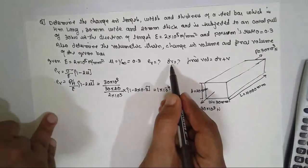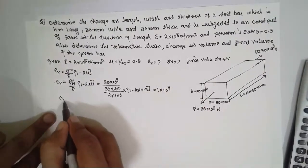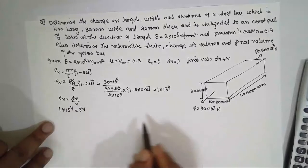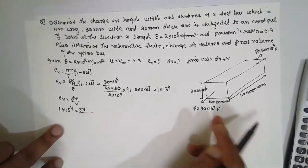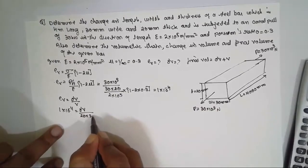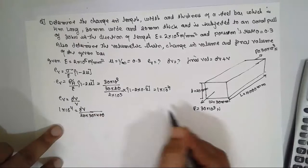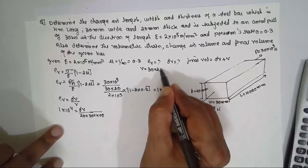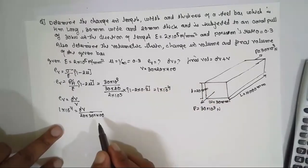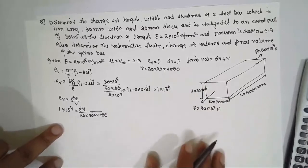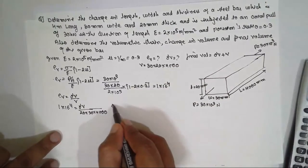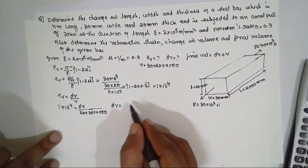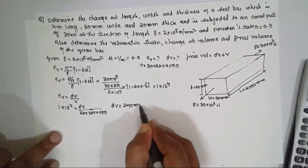Now find ΔV. Ev = ΔV/V, so 1 × 10⁻⁴ = ΔV / V. Initial volume V = 20 × 30 × 4000 = 2,400,000 mm³. Cross-multiplying, ΔV = 240 mm³.